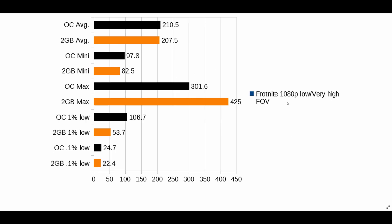Here we are with Fortnite at 1080p on low settings with the field-of-view distance set as high as possible. The average is up to 210.5 from 207.5, minimum up to 97.8 from 82.5, max is 301 which is down from 425, and the 1% low is up to 106.7 from 53.7. The difference in the maximums I can only explain by the nature of live gameplay — maybe a map load spiked that maximum.